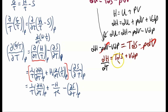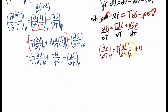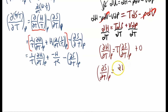Now we divide everything by dT. If we assume constant pressure, we're left with partial H over partial T at constant pressure equals T times partial S over partial T at constant pressure, since the VdP term goes to zero at constant pressure. Notice this partial entropy term is the same one we had earlier. Solving for it: partial S over partial T at constant pressure equals partial H over partial T at constant pressure times 1 over T.